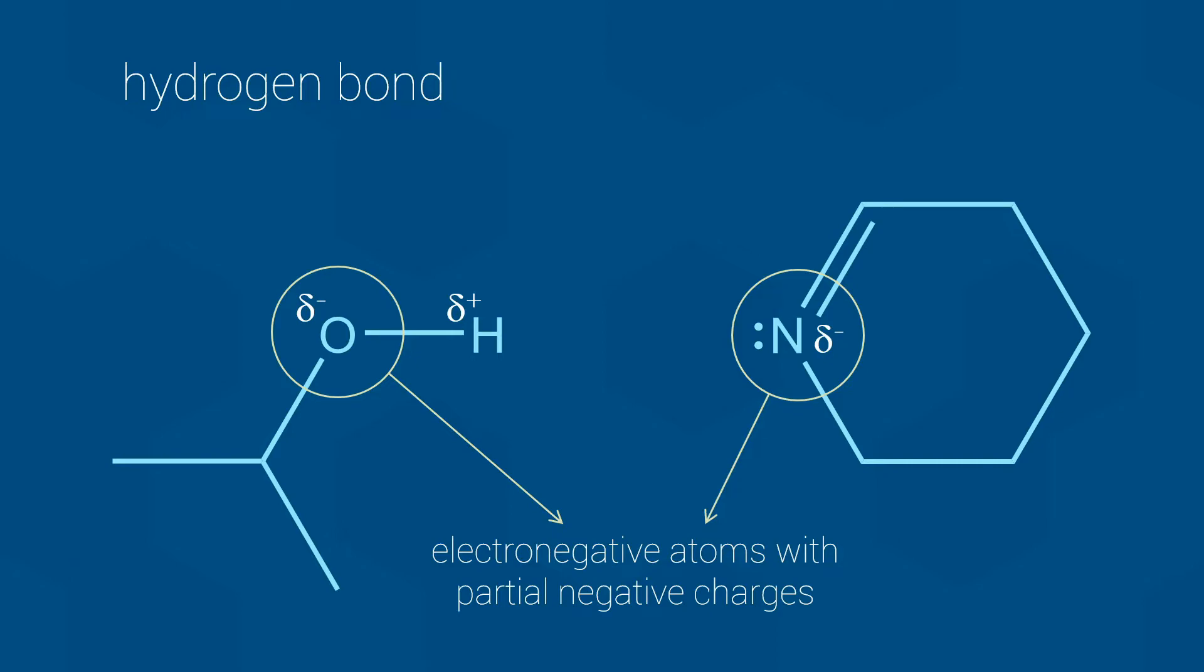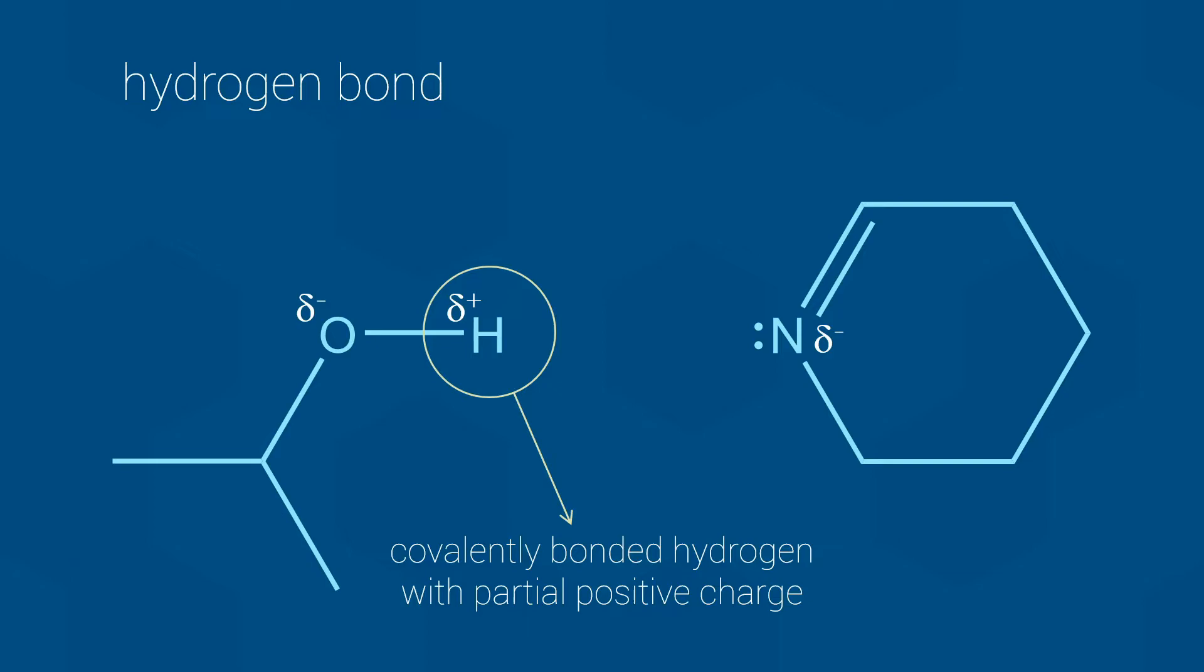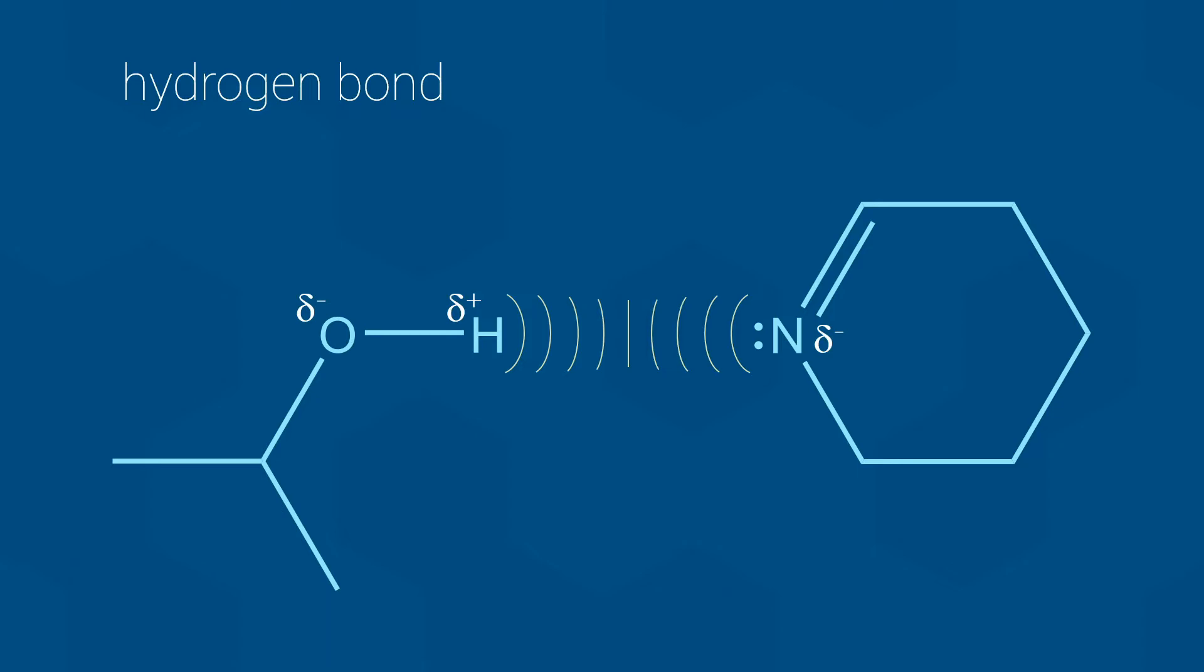What is different is that one of the two electronegative atoms has a single covalent bond to a hydrogen atom. Due to the difference in electronegativity, this hydrogen atom will have a partial positive charge and the bond has a permanent dipole. The final required feature is that the other electronegative atom, in this case the nitrogen, has a free lone pair of electrons. The result is that the hydrogen atom and its partial positive charge are attracted to the lone pair of electrons on the partially negative atom.